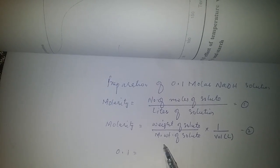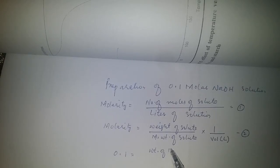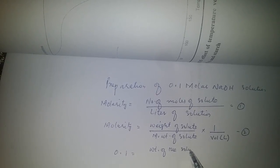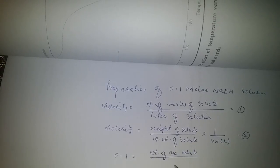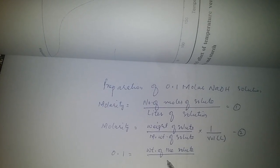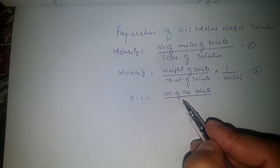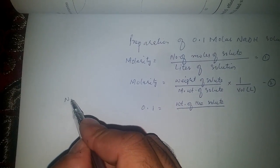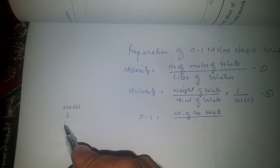The molecular weight of NaOH is 40, and we can calculate it. NaOH: sodium atomic weight is 23, plus oxygen 16, plus hydrogen 1.